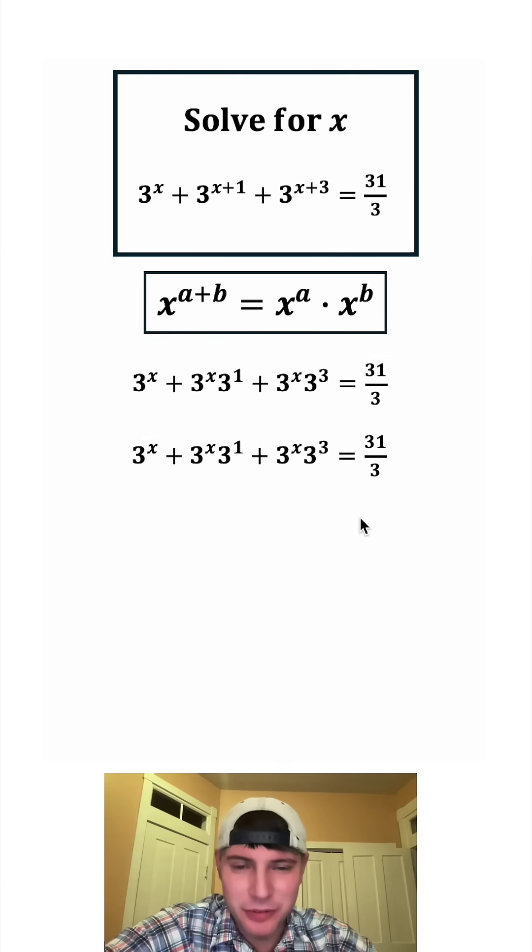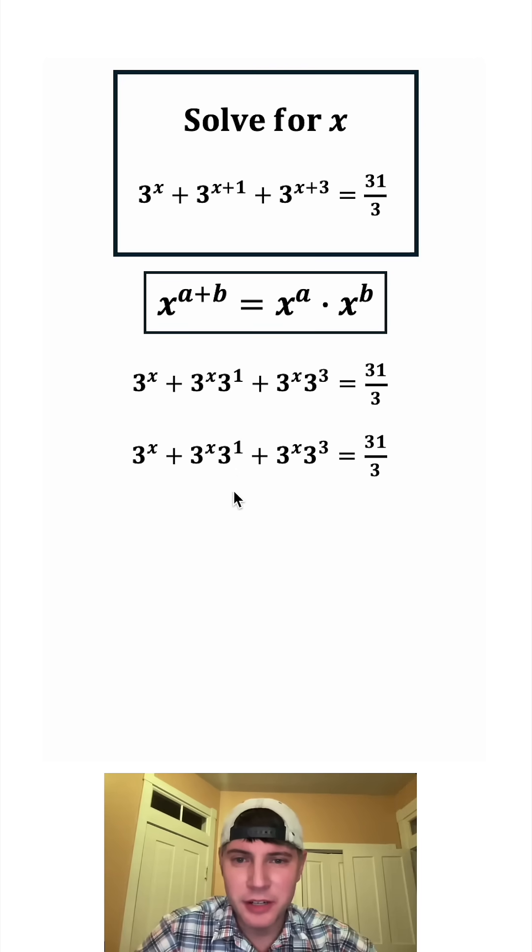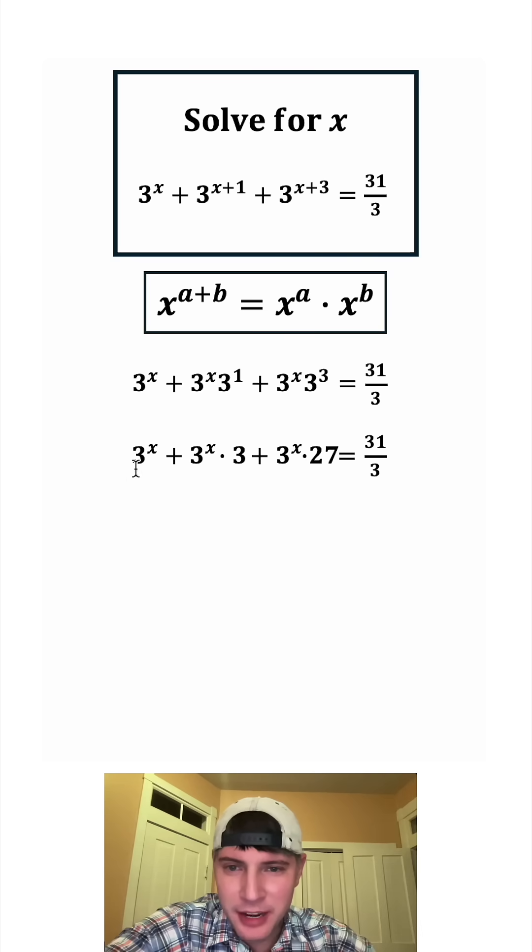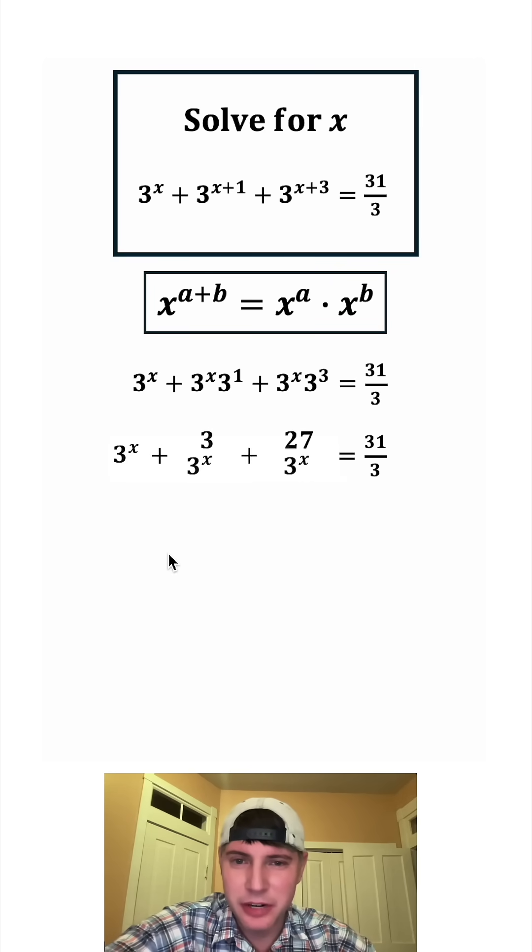And now let's try to simplify some things. This 3 to the 1 is 3 and 3 cubed is 27. And now we have three separate terms. All of them contain a 3 to the x. Normally we could factor out 3 to the power of x, but I kind of want to rearrange it like this.